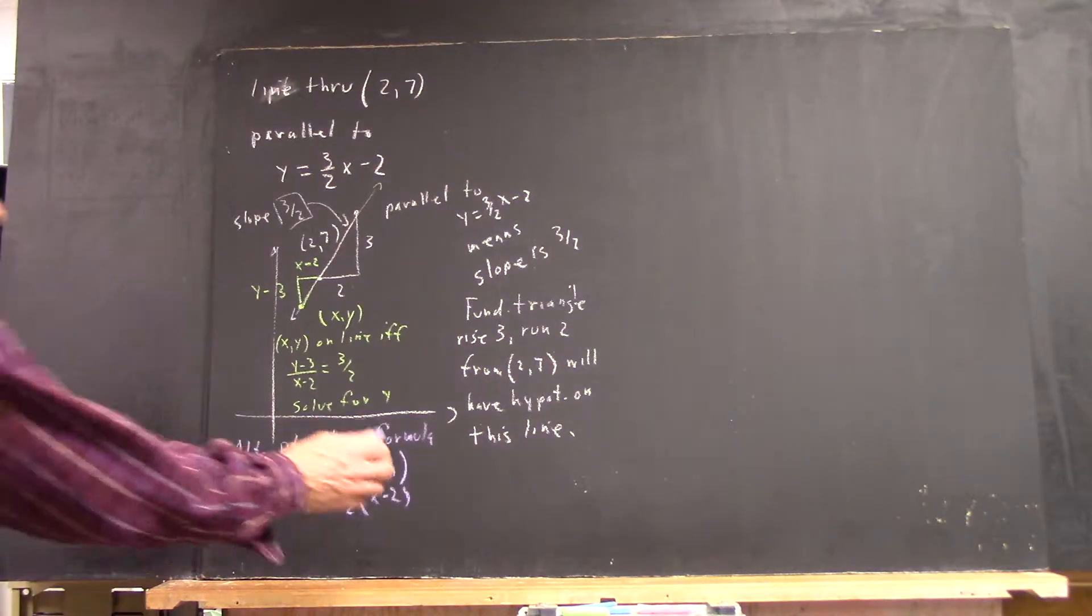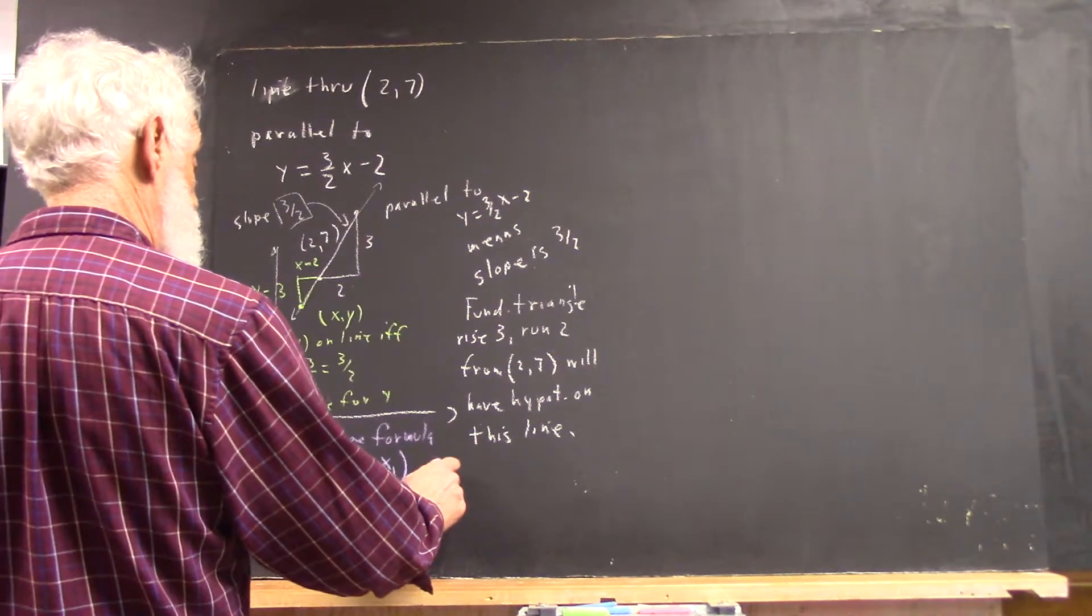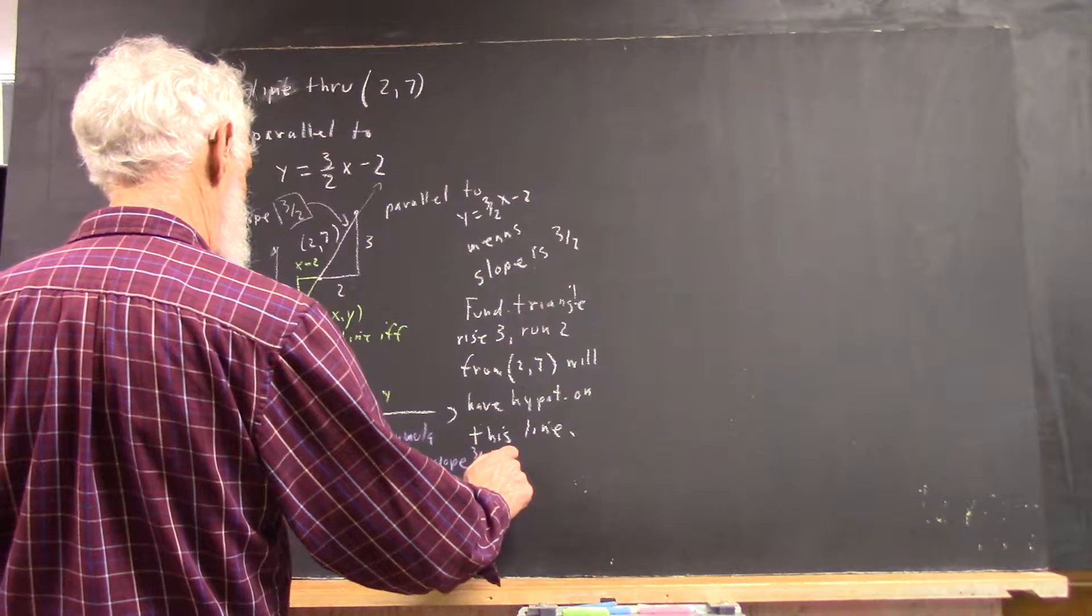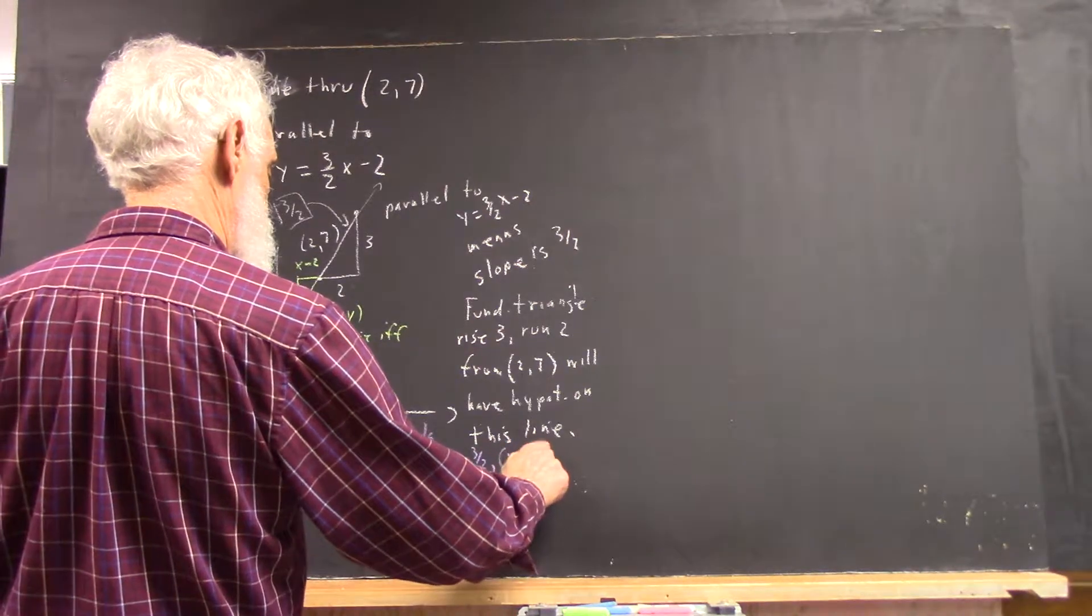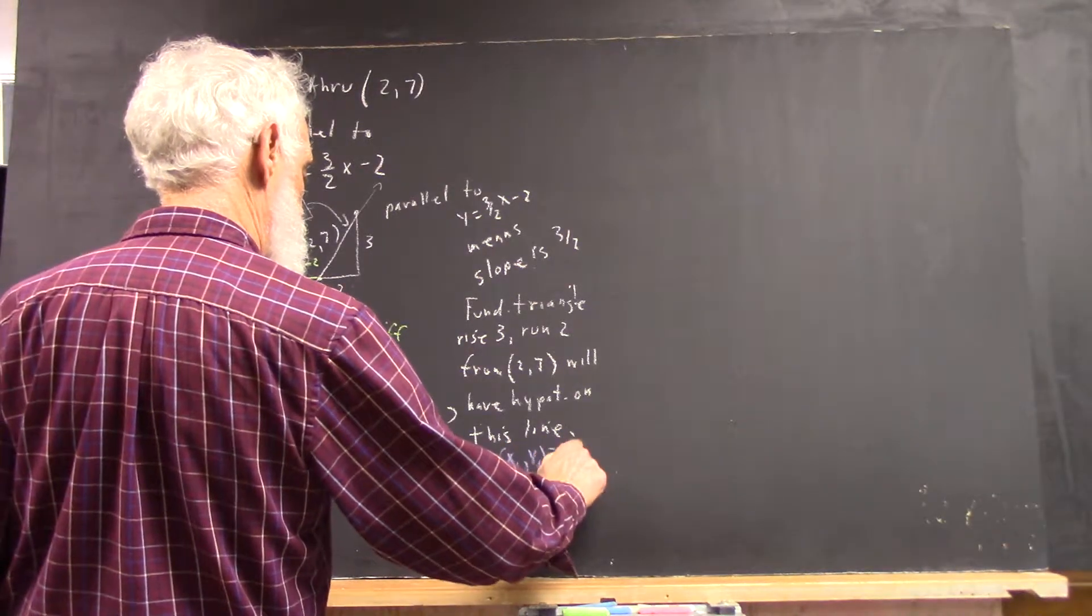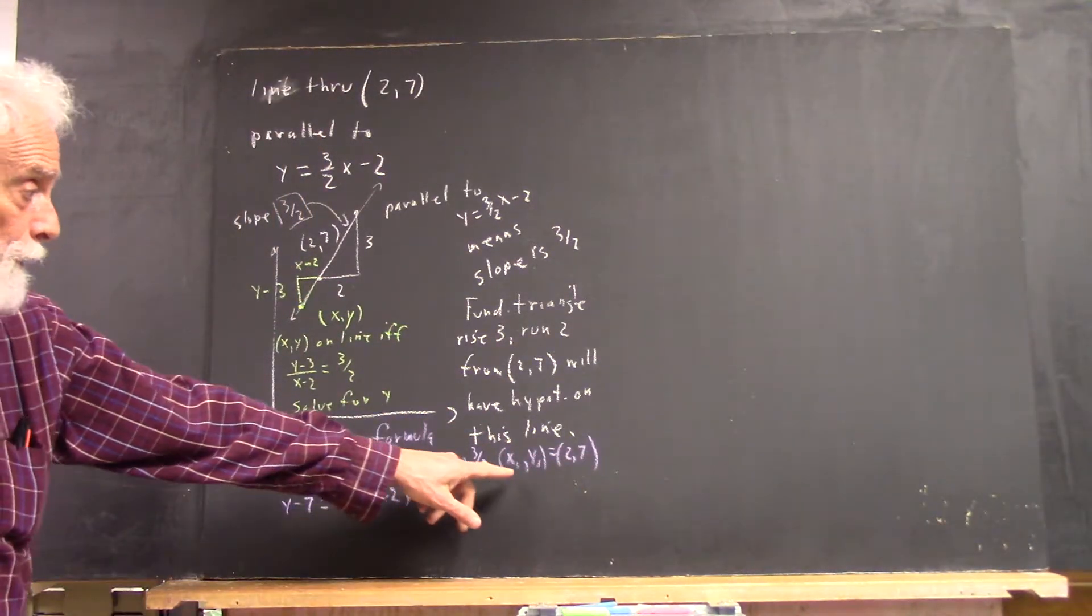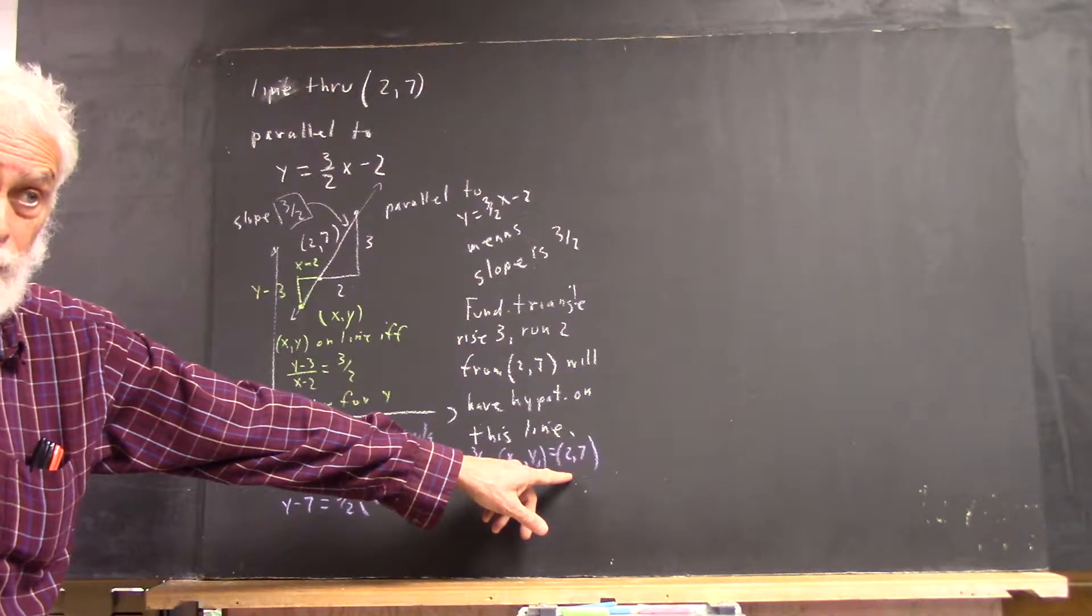Now, you might off to the side want to write it down. Here's your information. Slope is 3 halves, x1, y1 equals 2, 7, right?